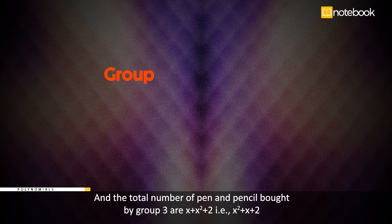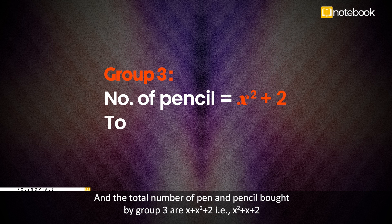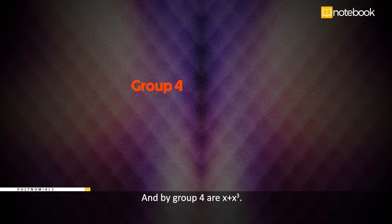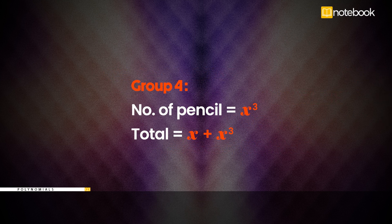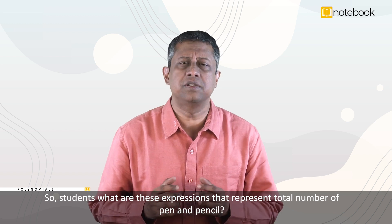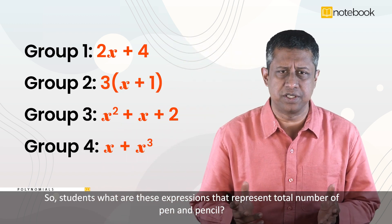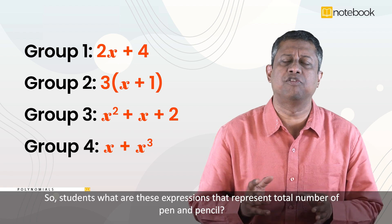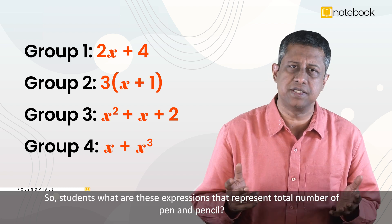The total number of pens and pencils bought by group 3 are x + (x² + 2), that is x² + x + 2. And by group 4 are x + x³. So students, what are these expressions that represent the total number of pens and pencils?